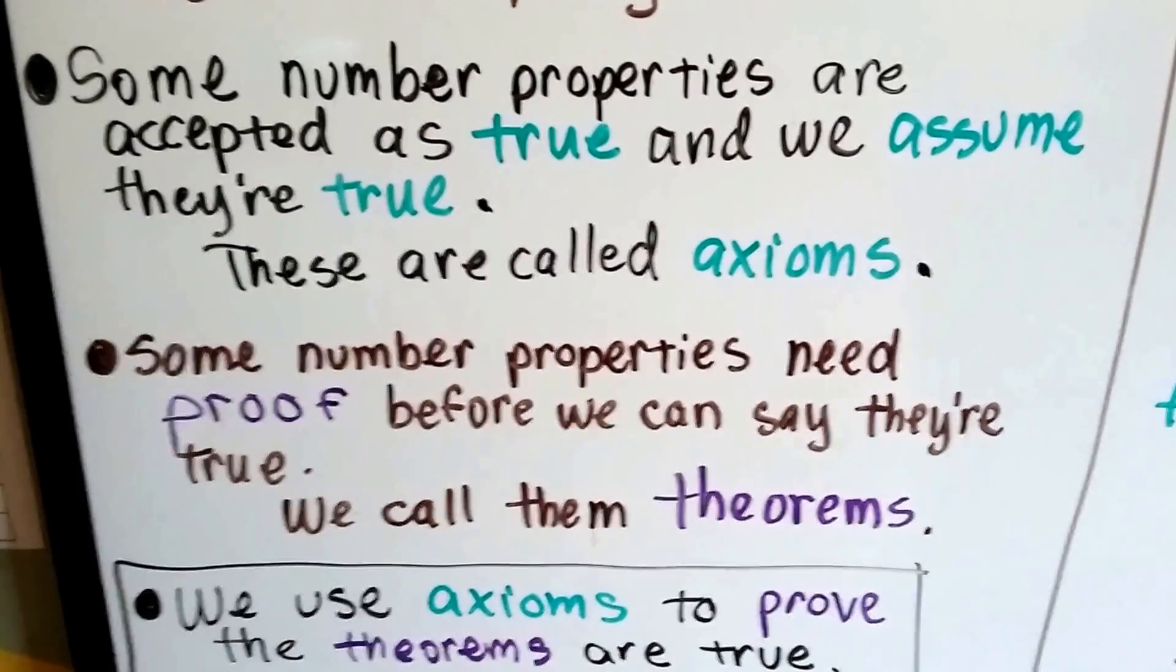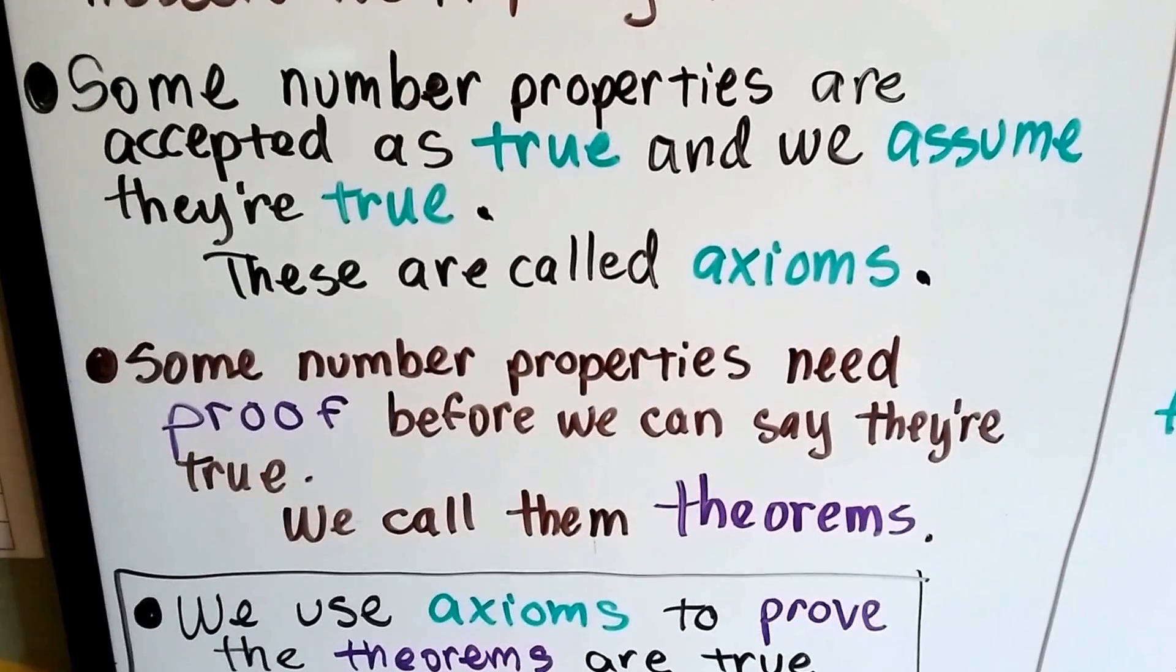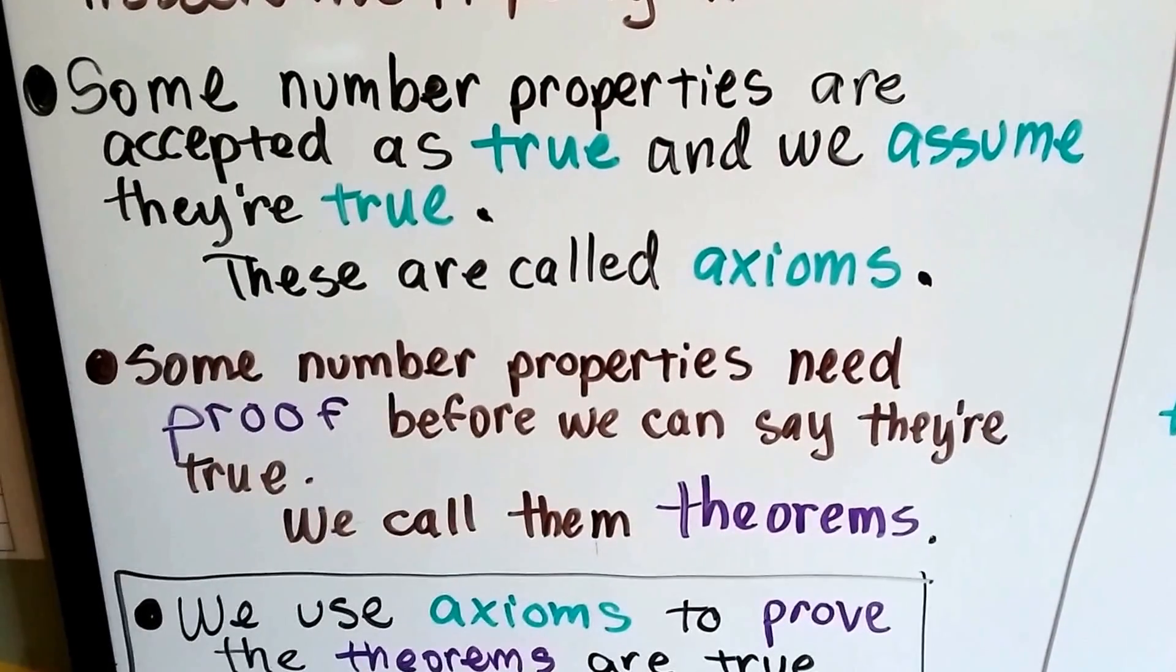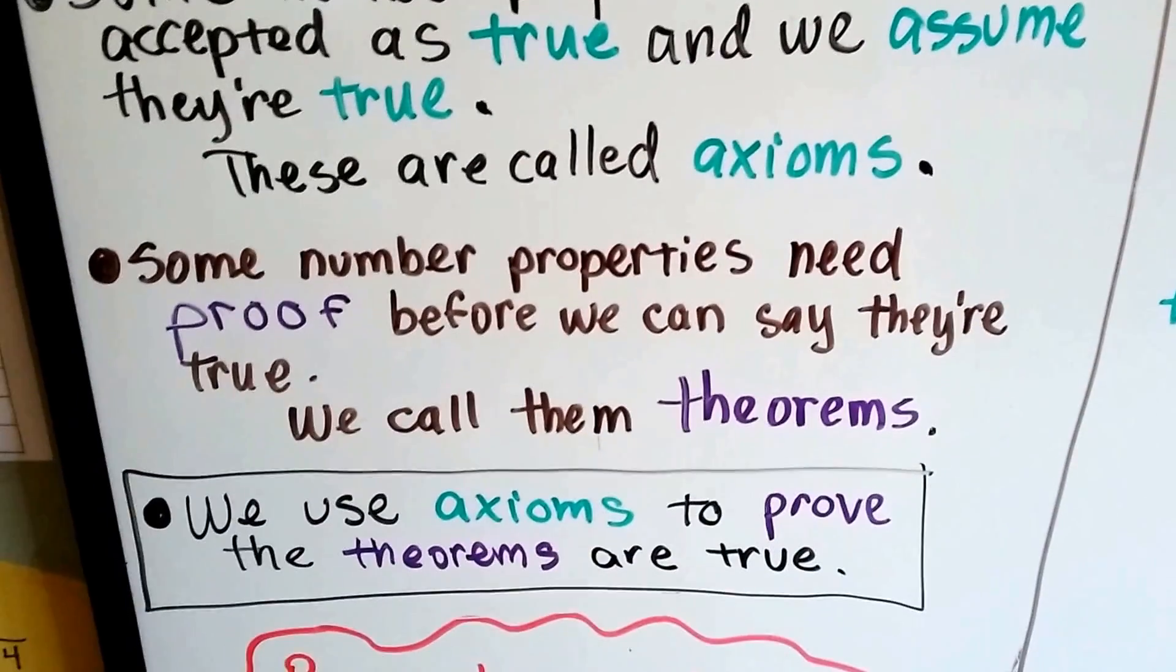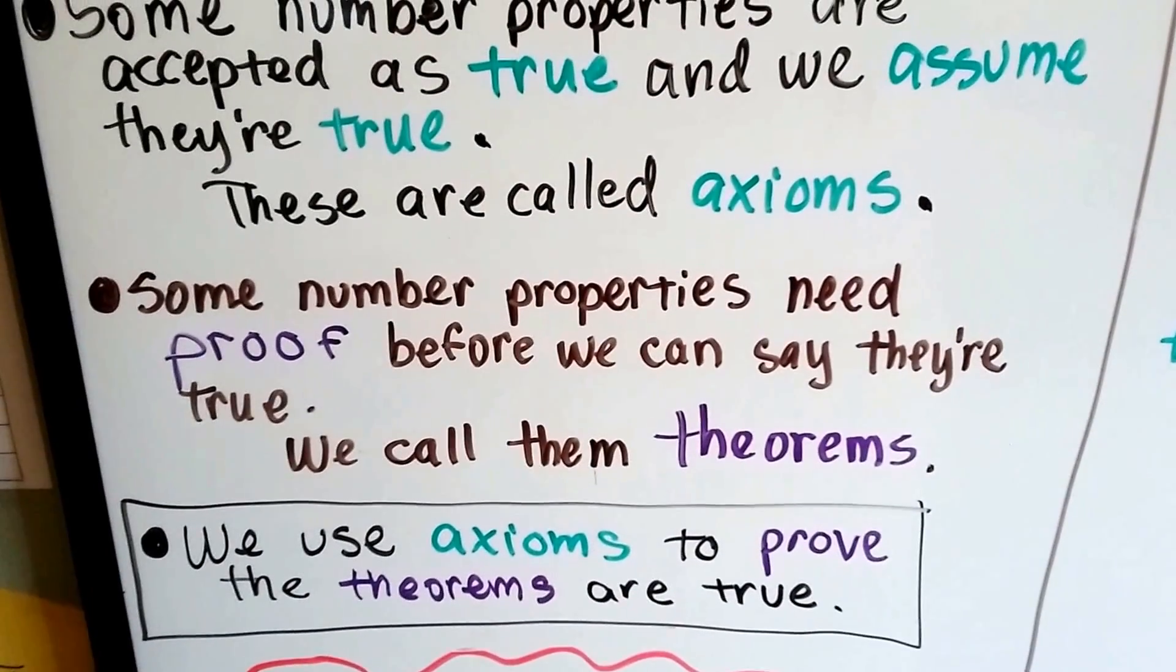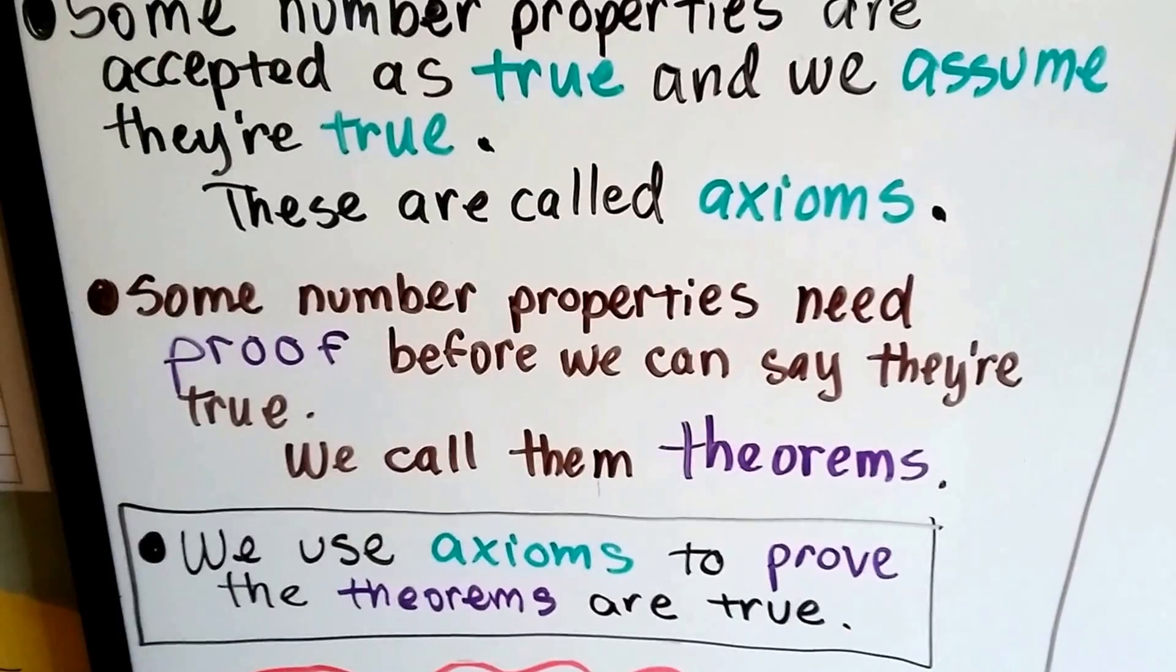Some number properties need proof before we can say they're true. We call those theorems. We use axioms to prove the theorems are true. Axioms get us to the theorems.